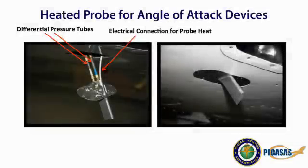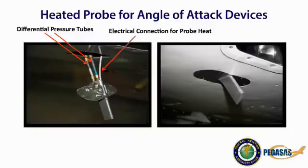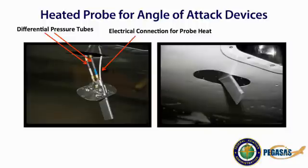Installation of the optional probe heat function requires some planning. The probe heat will require a separate switch and fuse or breaker, along with the appropriate wiring per Advisory Circular AC 43.13-1B Chapter 11, Section 5. The probe heat requires over 7 amps of electrical power. Use shielded wire to minimize interference with other instrumentation, and route the wiring such that the risk of mechanical damage and damage caused by fluids, vapors, or sources of heat is minimized. Operation of the probe heat does not affect the angle of attack calculations or readings.